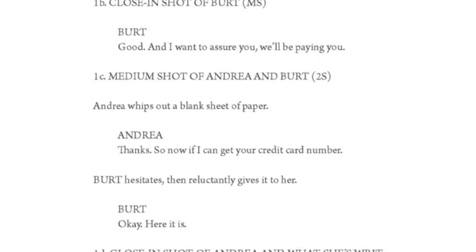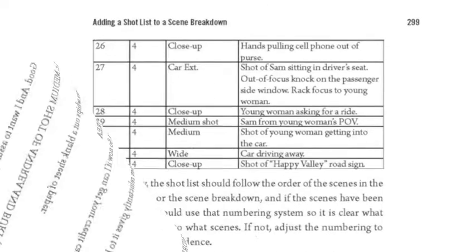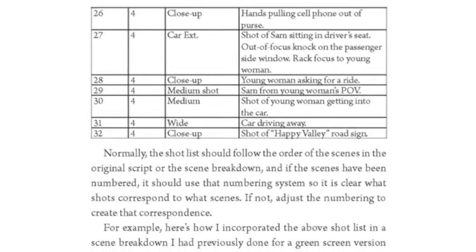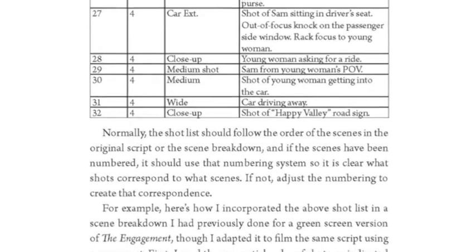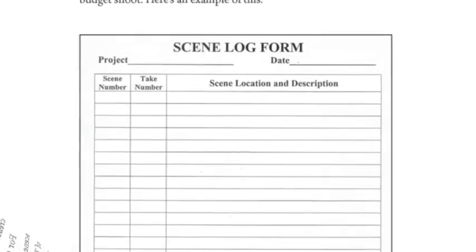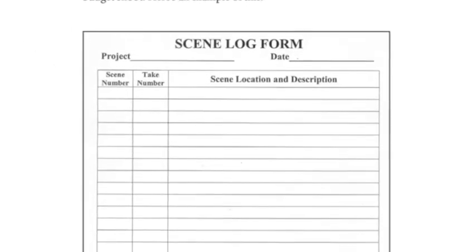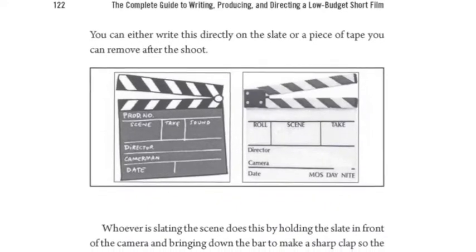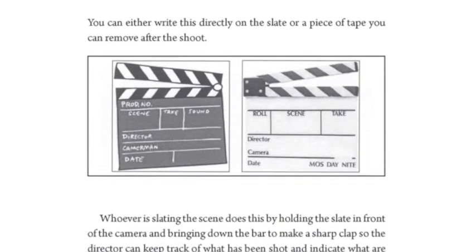A script is typically shot out of order because you want to group together the scenes that are in the same place. A lot of times people forget about that — you've got the script together and you really haven't thought through exactly how the scenes are going to play, where the locations are going to be, and you want to time those out.